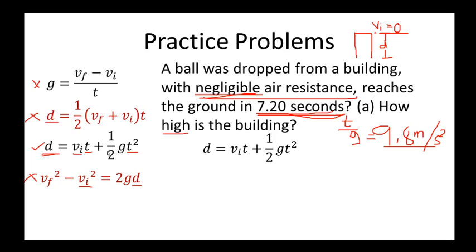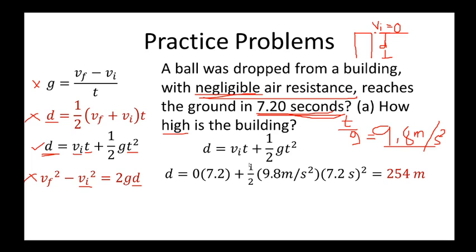The formula we use is: d = Vi·t + ½g·t². Substituting values: initial velocity is 0, so the first term equals zero. Then we have ½ × 9.8 × (7.2)². Computing this gives a distance of 254 meters.